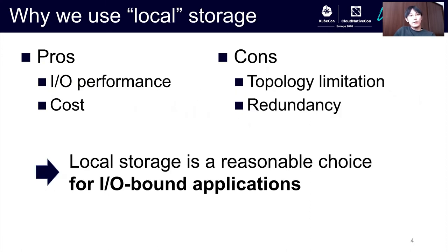So why would we use local storage? In general, persistent storage in Kubernetes relies on remote storage systems such as Ceph. It also includes storage services provided by cloud service providers such as Amazon EBS. However, the benefits of using local storage still exist, which are IO performance and reasonable cost. Of course, using local storage in Kubernetes has some disadvantages such as topology limitation and redundancy problems.